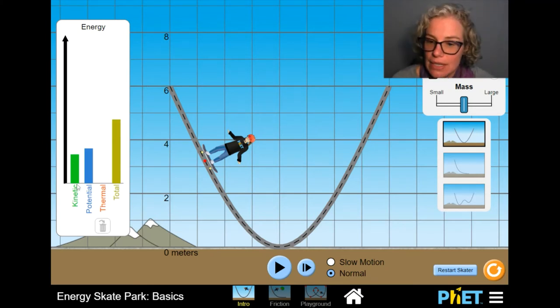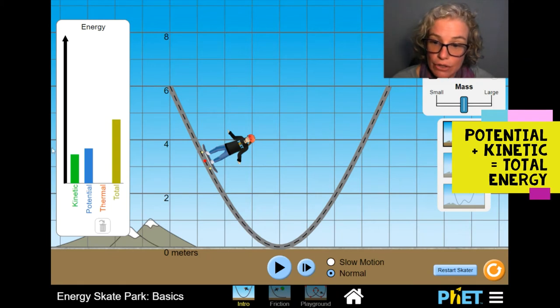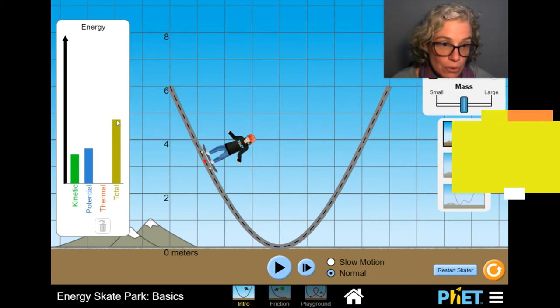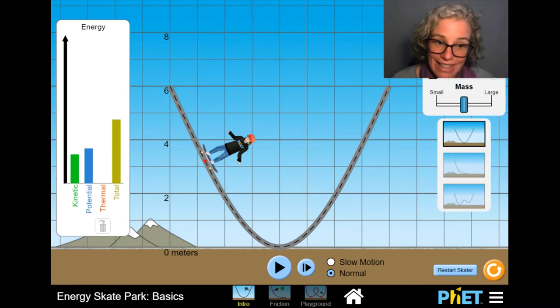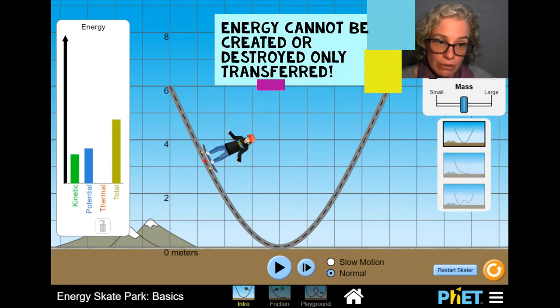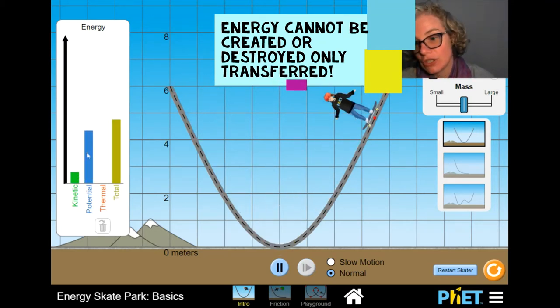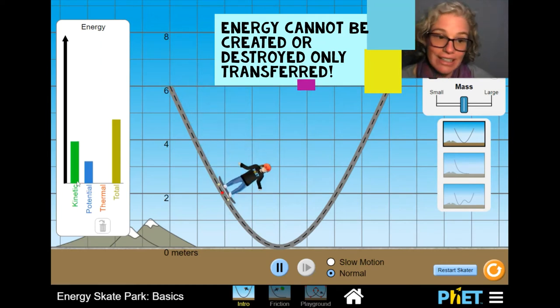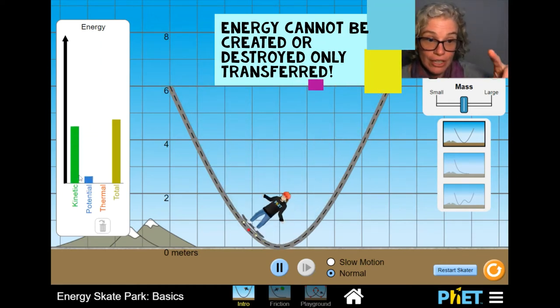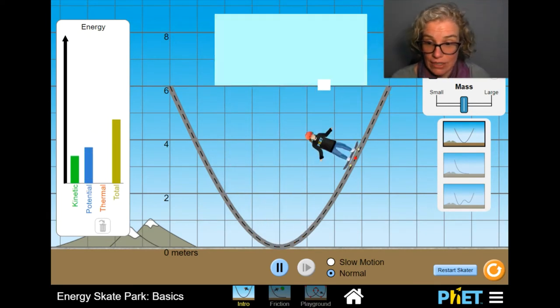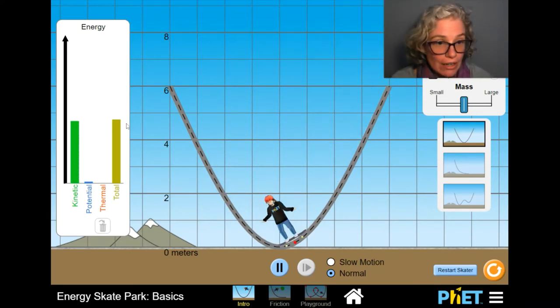But the other thing I want you to notice is that anytime I pause the skater's motion and I were to take this green kinetic bar and set it on top of the potential bar, you would see the two bars add up to the total energy. And that is because energy cannot be created or destroyed, only transferred.